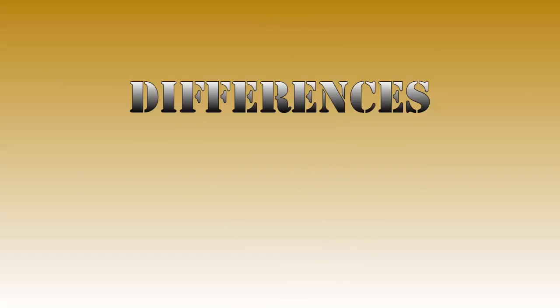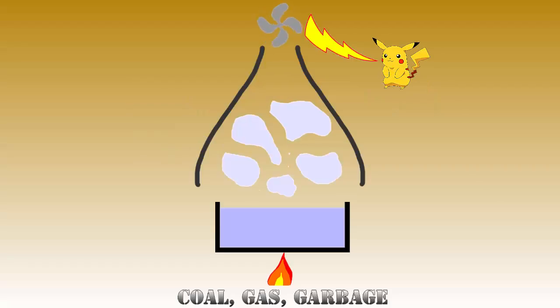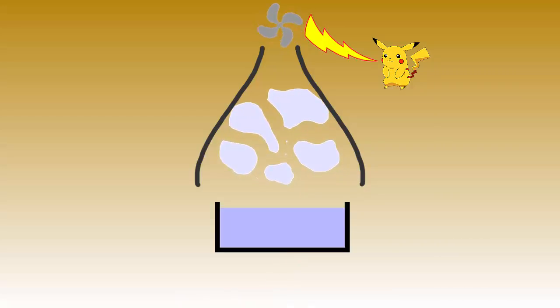There are differences though. The main difference is safety. Conventional power plants are relatively safe to use, due to the fact that you can just deprive the energy generation chamber of its fuel, which would stop the water boiling, which would in turn stop the generators.